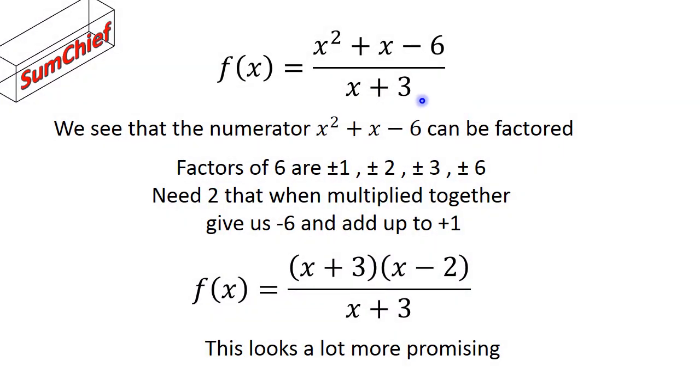The numerator x squared plus x minus 6 can be factored. To do this, we need factors of 6, which are plus or minus 1, plus or minus 2, plus or minus 3, or plus or minus 6. What we need to find is two of these factors that when multiplied together give us minus 6, but when we add them we get plus 1, because the function here is plus 1x and minus 6.